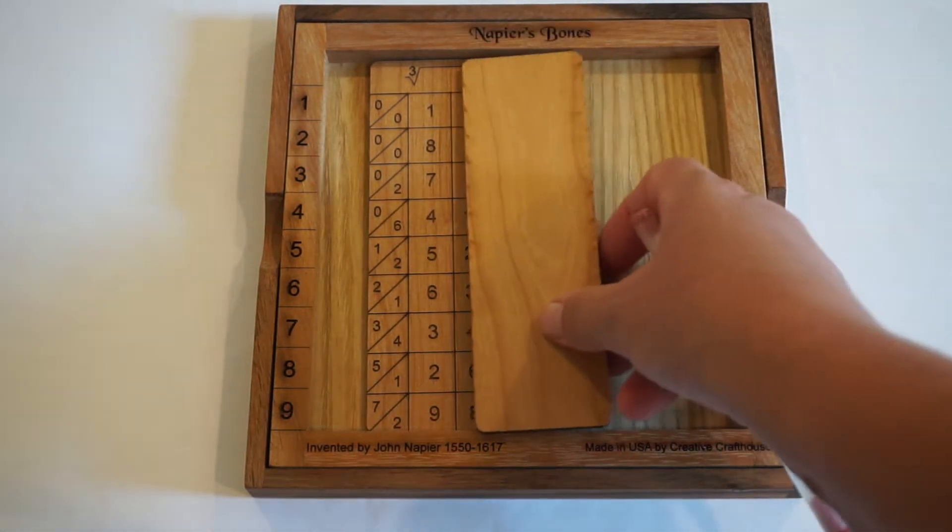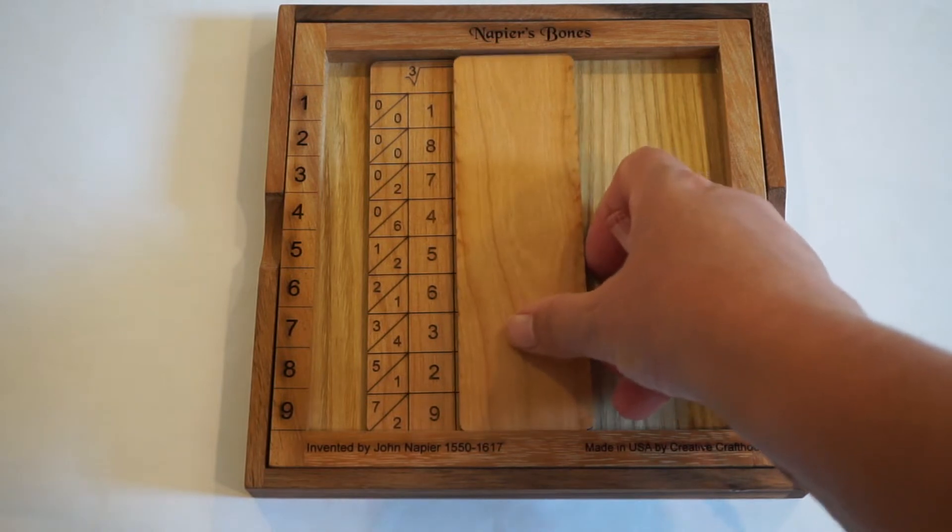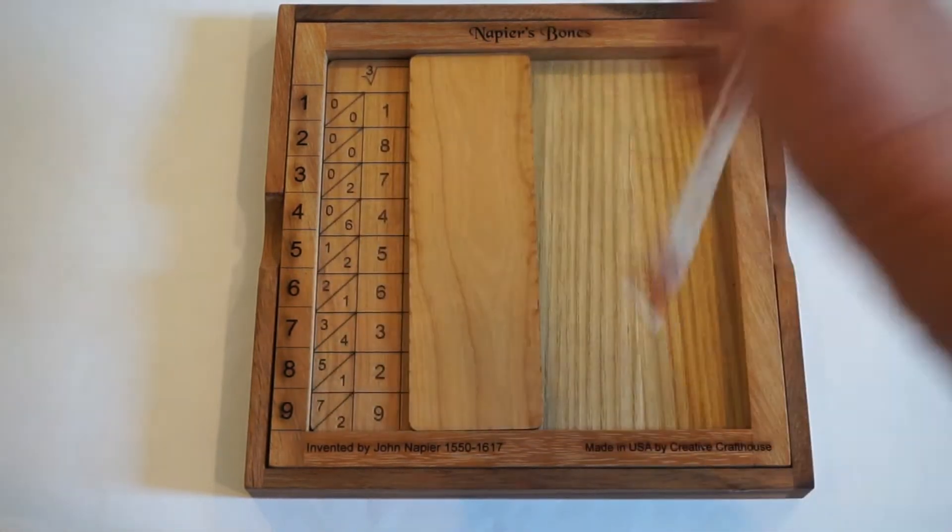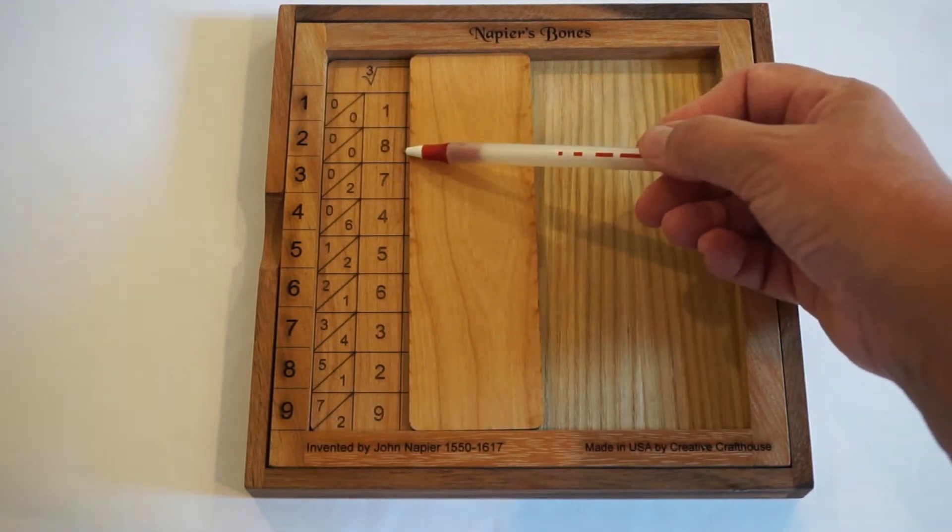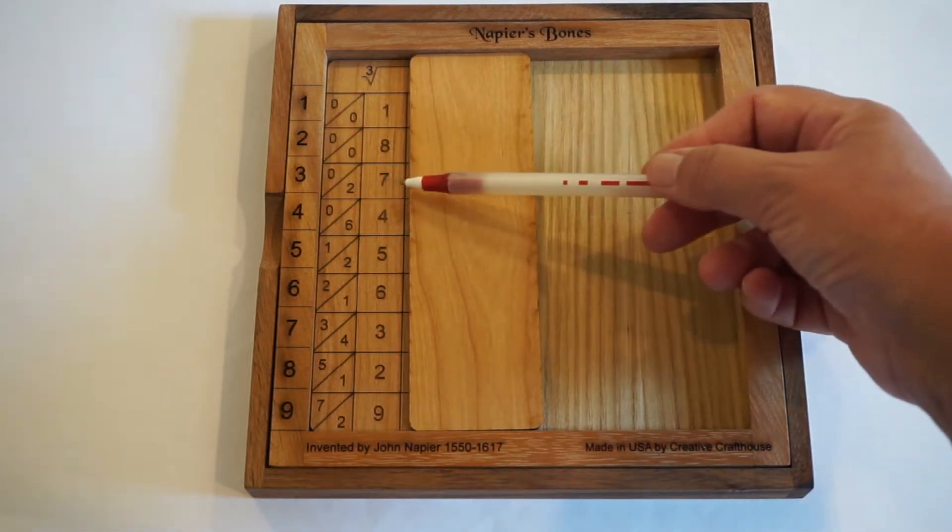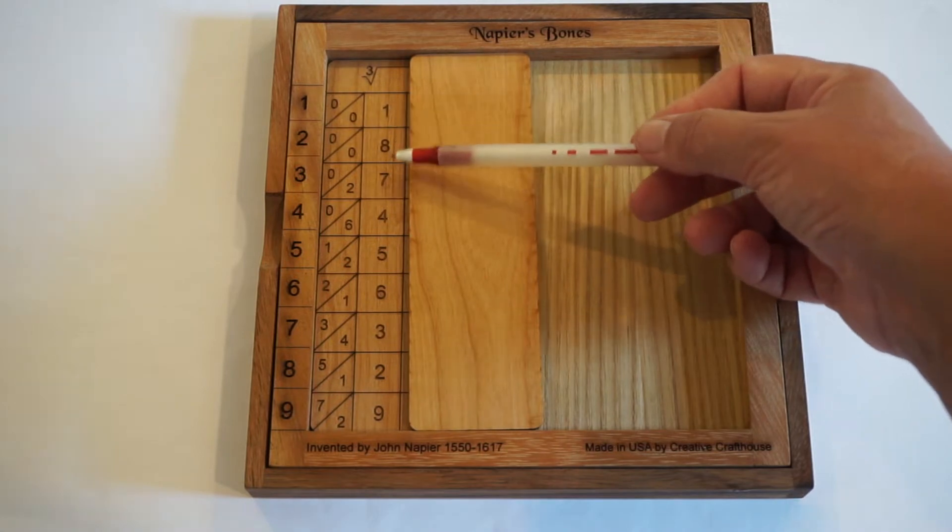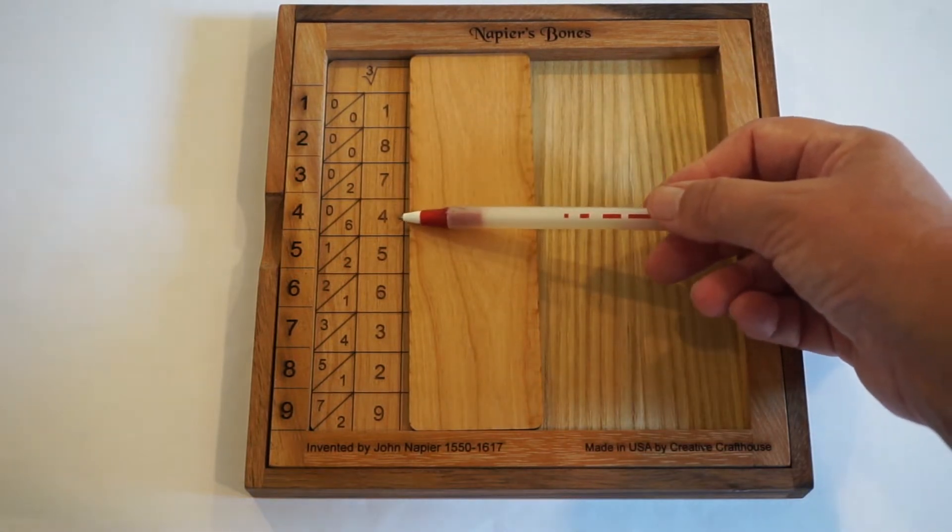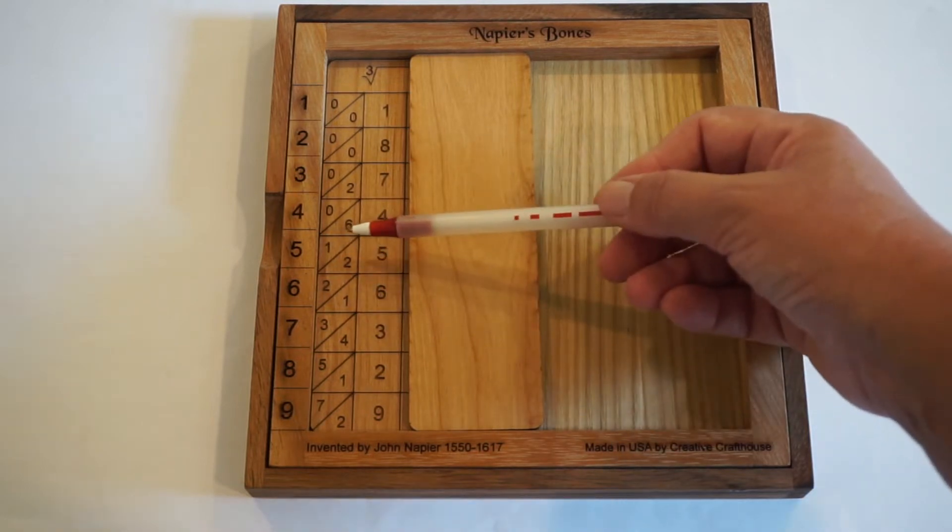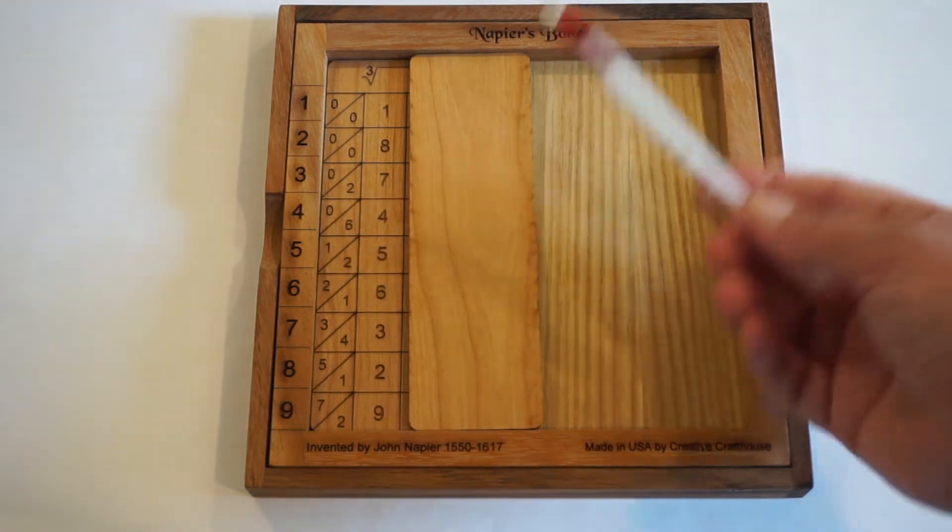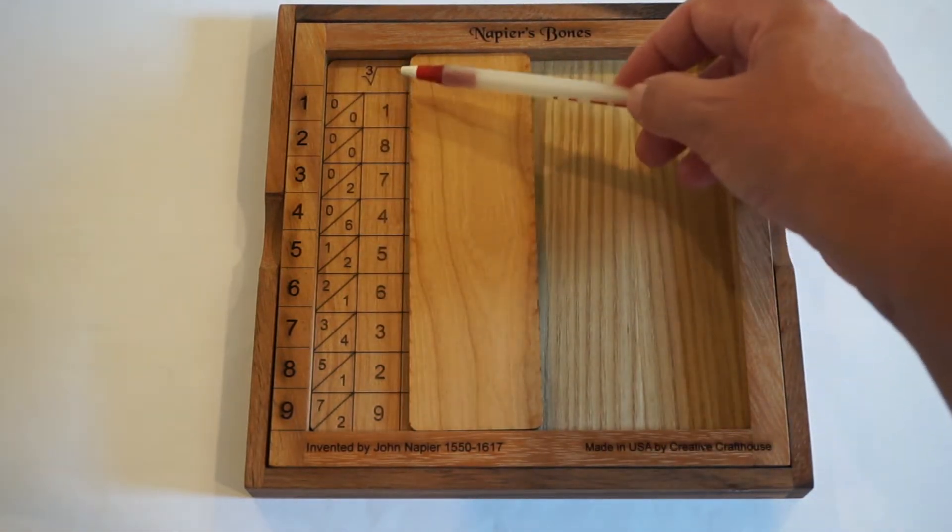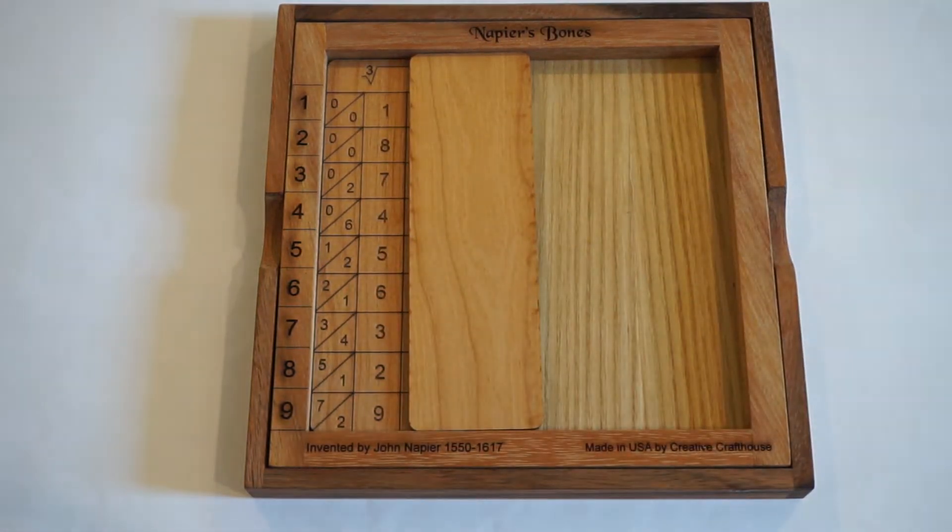But actually what's happening in those first two rows is that you have perfect cubes. 1 cubed is 1, 2 cubed is 8, 3 times 3 times 3 is 27. So what this second column is is just the ones place for your cubes, and the column before that has the hundreds place and the tens place. So these first two columns give you your perfect cubes.